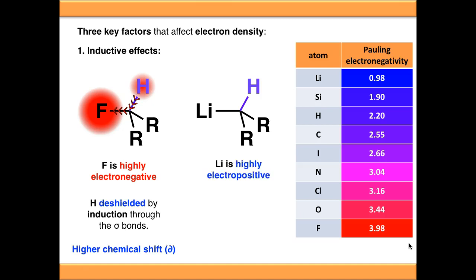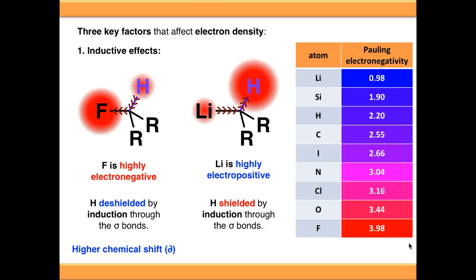On the other hand, lithium is highly electropositive — it would rather give electrons to something else. As a result, lithium is going to push its electron density back through the carbon-lithium bond and through the carbon-hydrogen bond, shielding hydrogen relative to what it would normally be. So H is said to be shielded by inductive effect and has a lower chemical shift. The signal for the fluorine-bearing proton will appear to the left-hand side of the spectrum at higher ppm, and the signal for the lithium-bearing proton will appear to the right side at lower ppm.